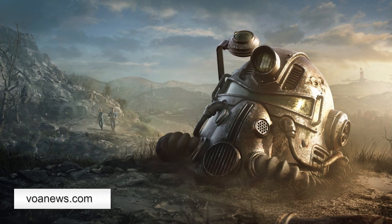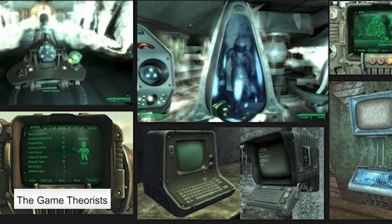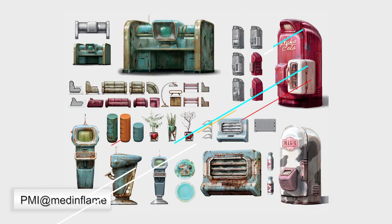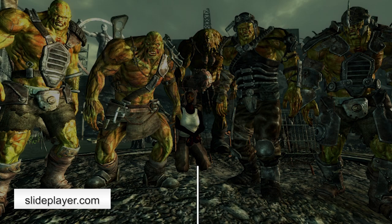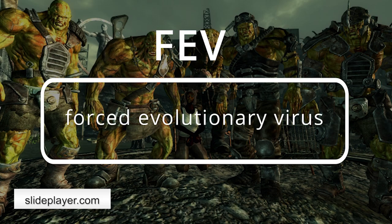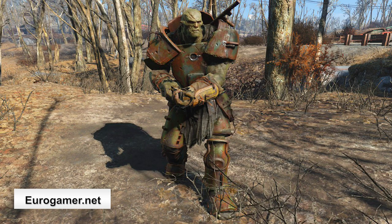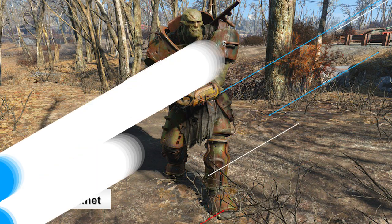The Fallout universe is filled with many unique scientific and technological concepts, and today we're going to be focusing on FEV. The FEV, which stands for Forced Evolutionary Virus, is described as a major source for mutation, being the go-to tool for creating super mutants, along with a few other sufficiently disturbing creatures. Here's a quick rundown.